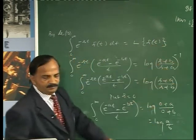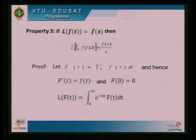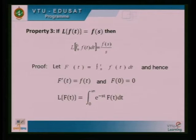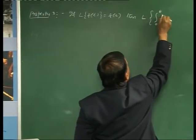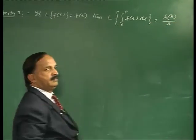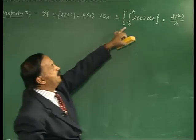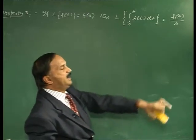Next, property 3: if L{f(t)} = F(s), then L{integral from 0 to t of f(t) dt} = F(s)/s.